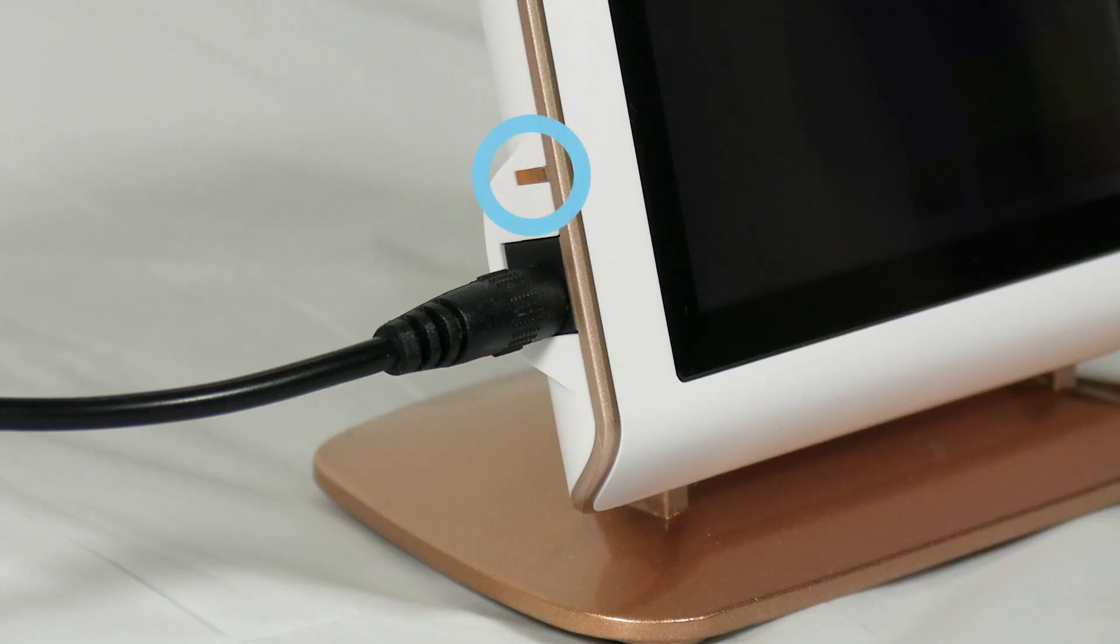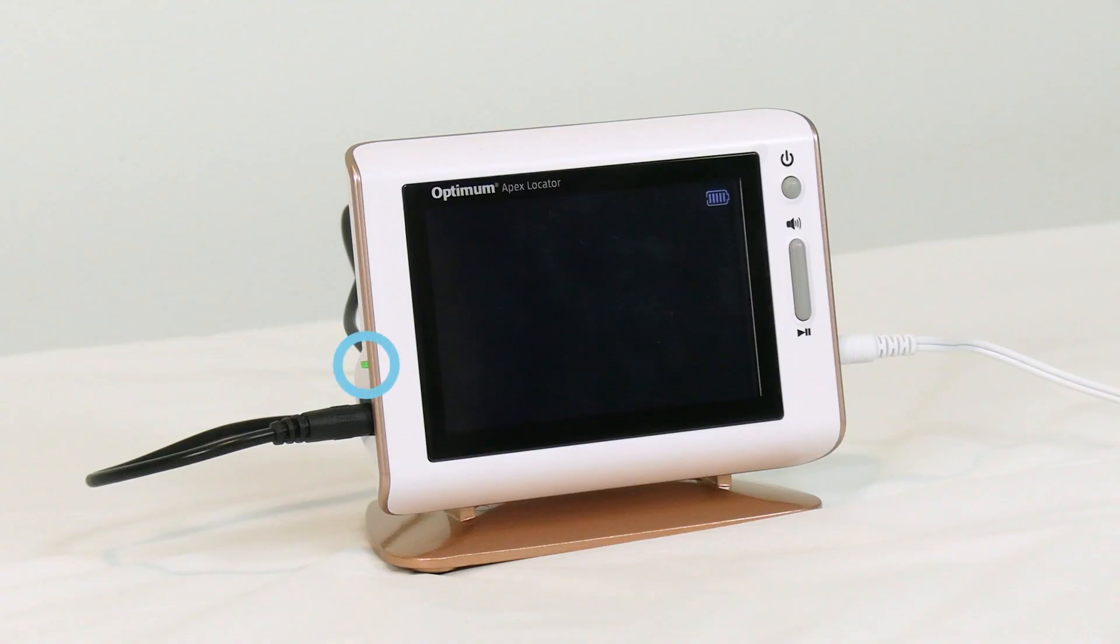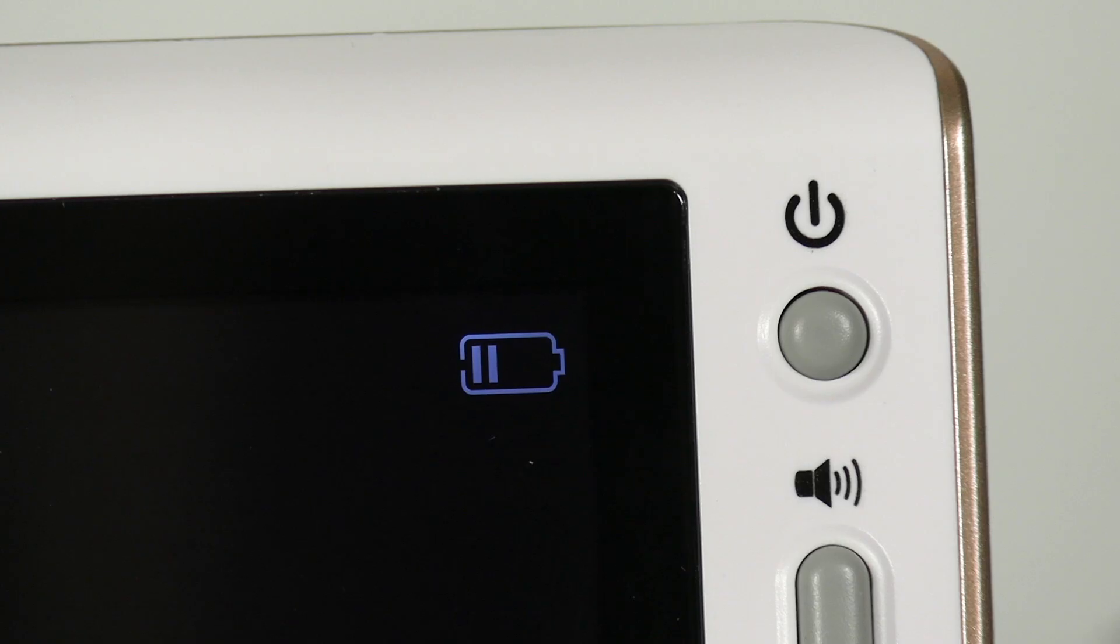The yellow indicator display confirms the device is charging. When the yellow indicator turns green, the device is fully charged. It may take up to 120 minutes to charge fully.